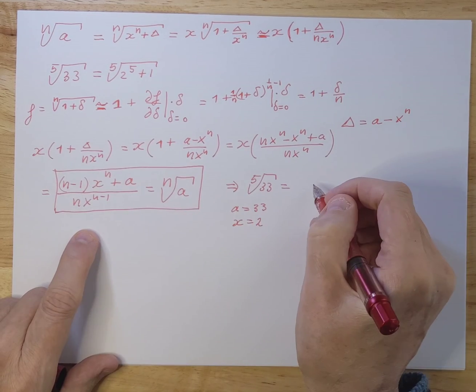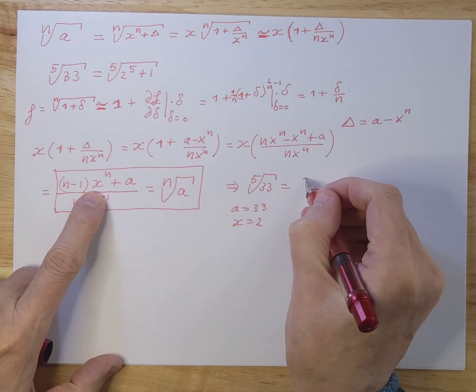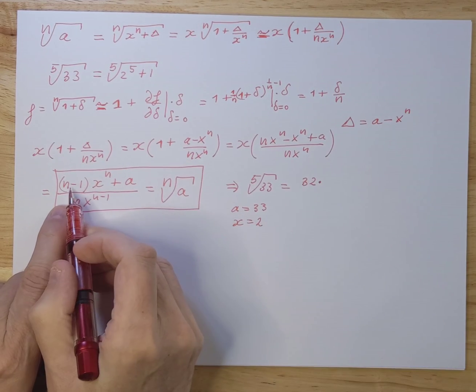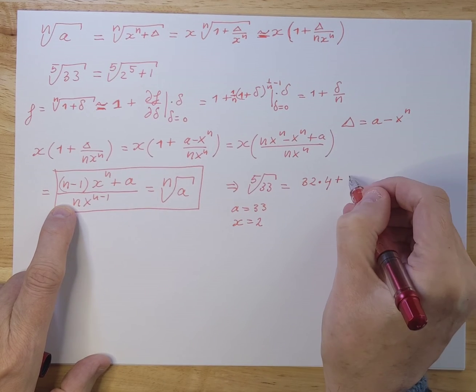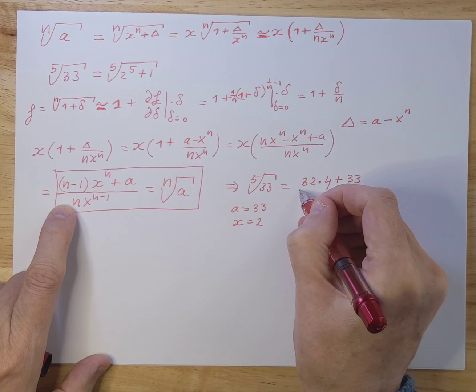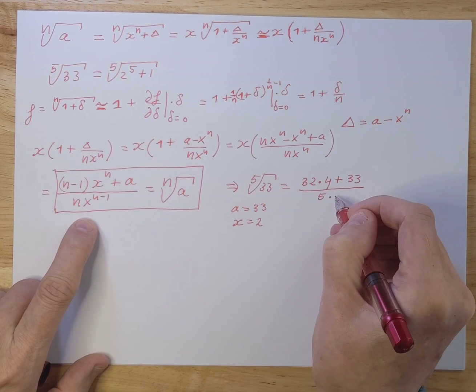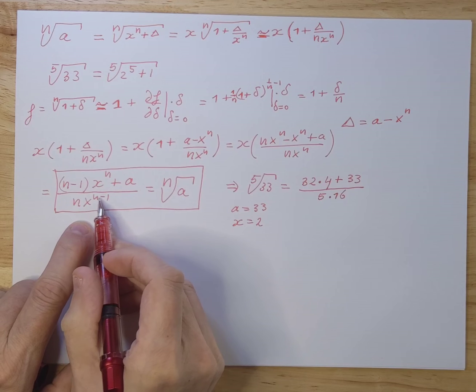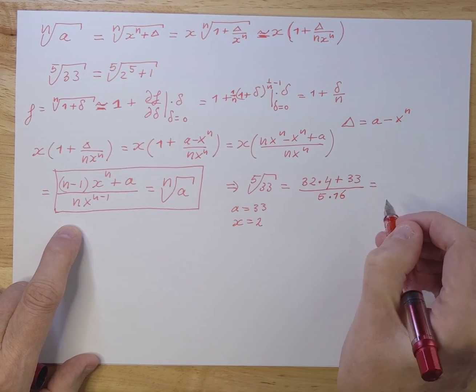And now if we fill that out, we get essentially 32 times, and it's 5 times 4, so that's 4, plus 33, divided by 5 times 16. Because it's 2 to the power of 4, n is 5, 5 times 16 gives you 80.